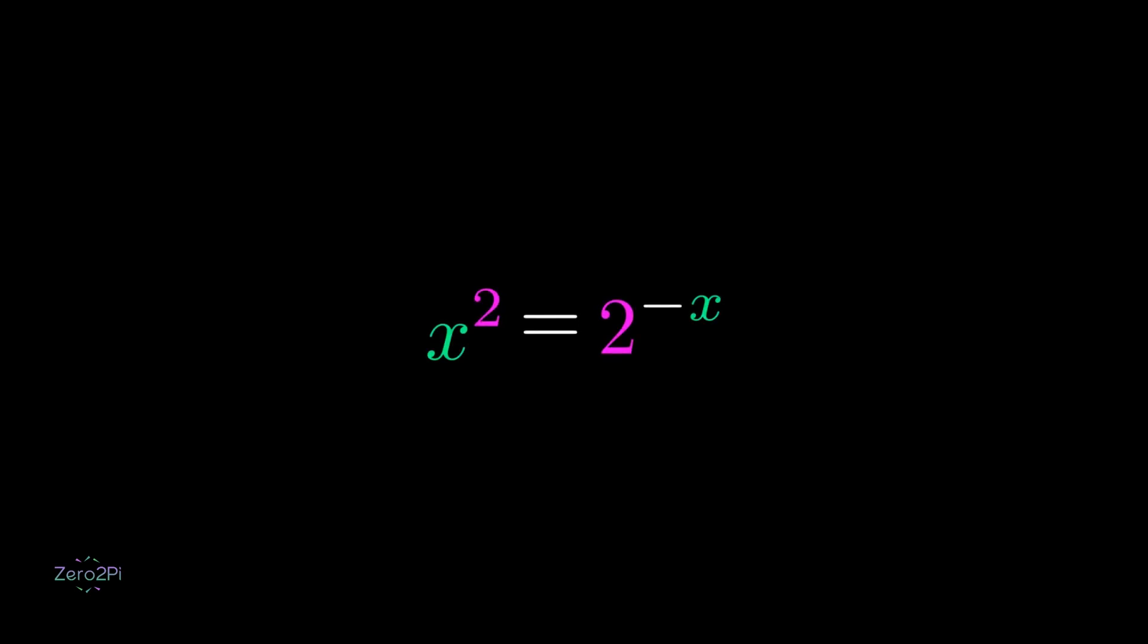Today we're going to solve an interesting equation: x squared equals 2 to the negative x. This is a transcendental equation, but to get both answers, we need to use advanced methods. But let's start simple.